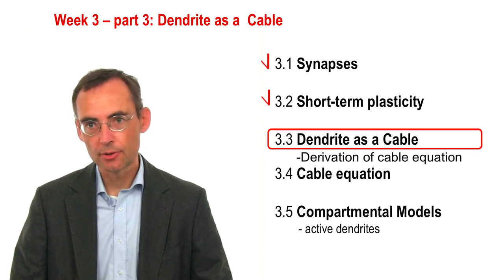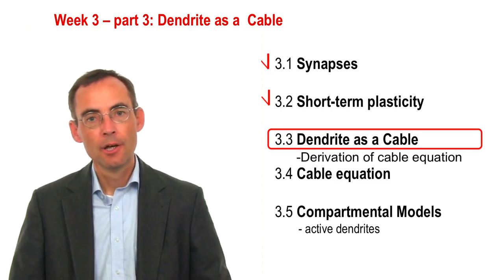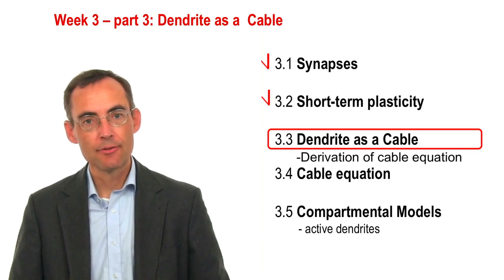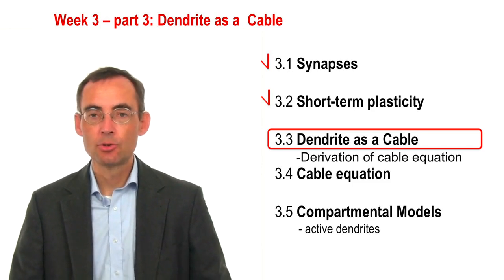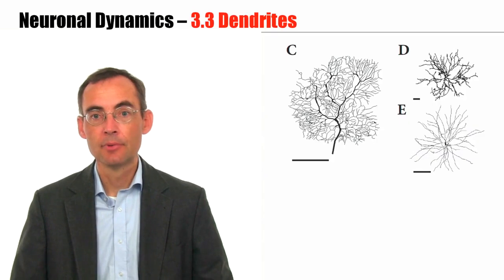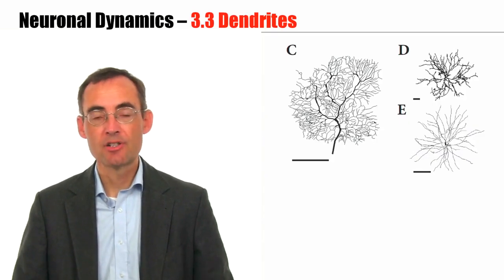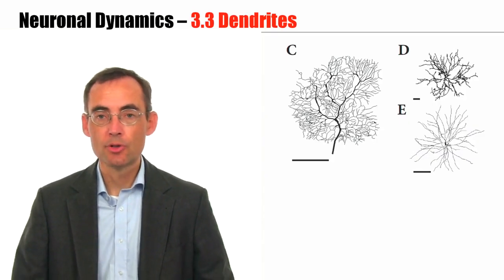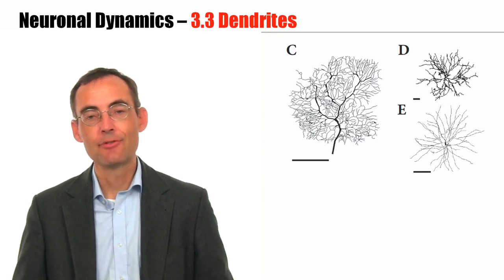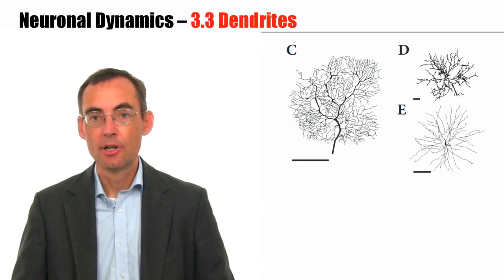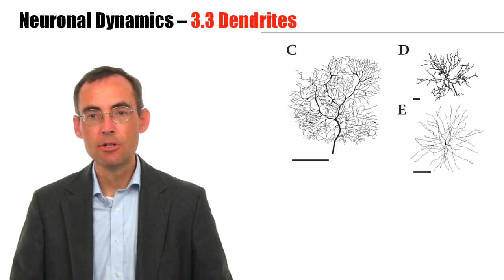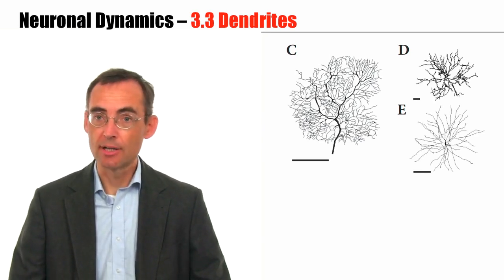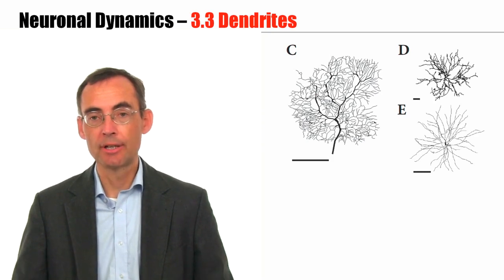Welcome to the third part of week 3. In the previous two parts, I've discussed synapses. Now I would like to turn to dendrites. Indeed, dendrites are interesting. Neurons of different type have different dendrites. There are various shapes. And the question arises, can we include the shape of dendrites into our modeling framework?